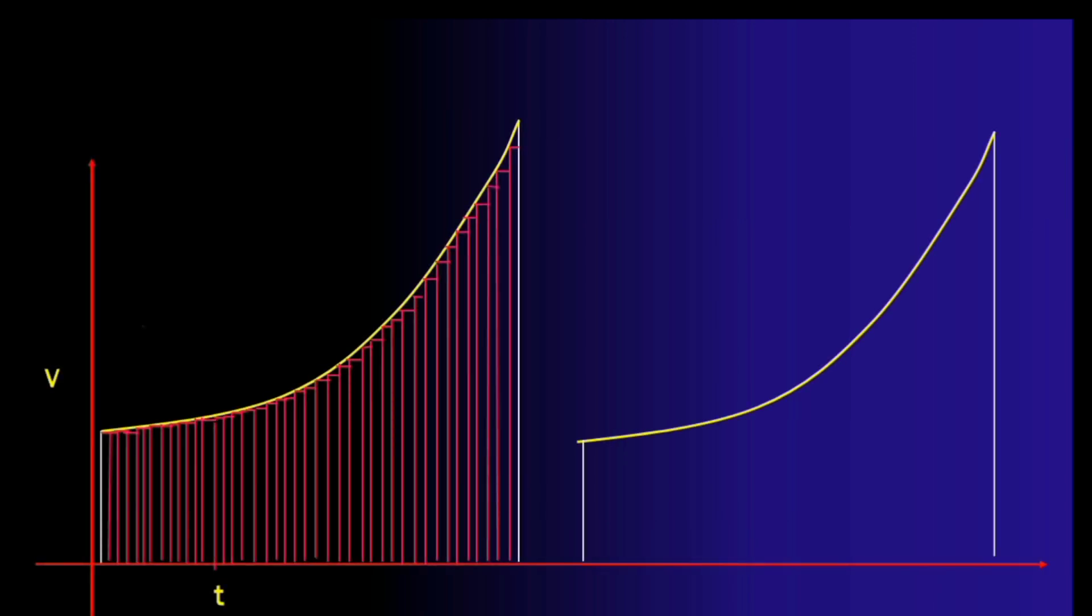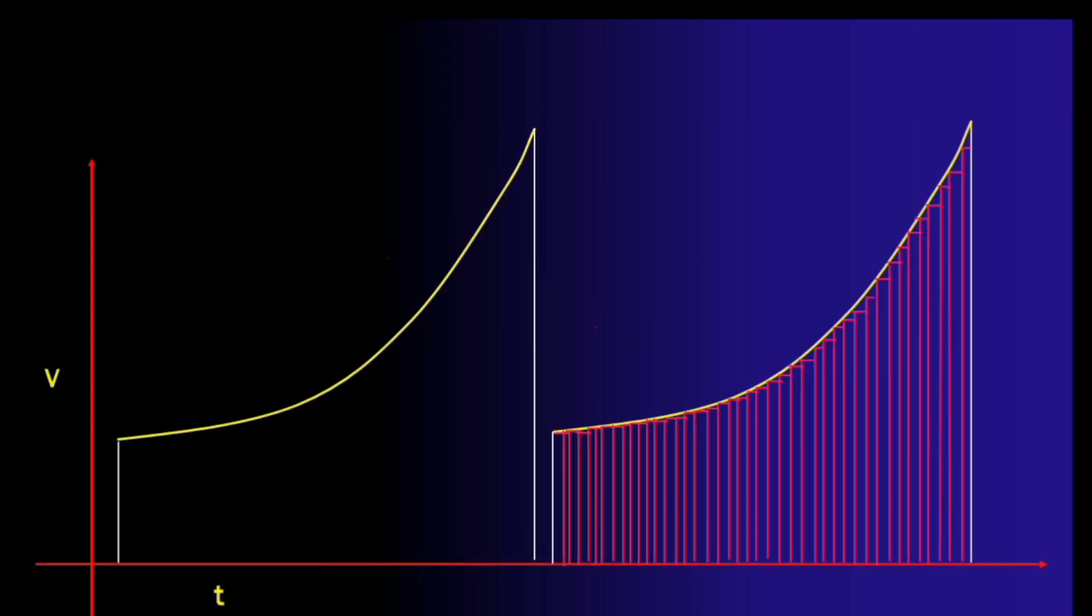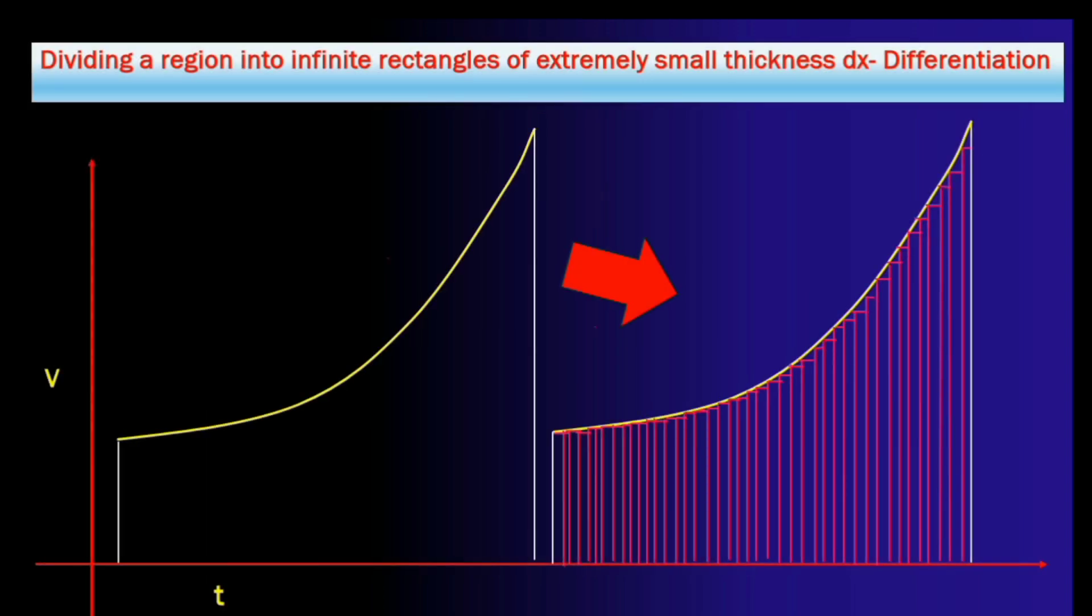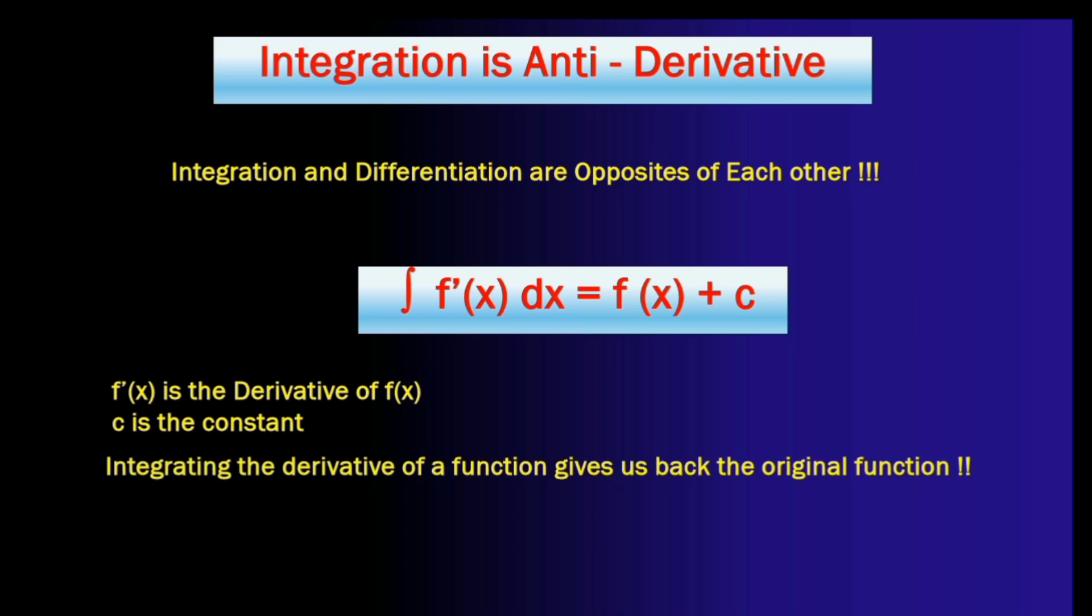So friends we can say that the process of continuously adding infinite number of rectangles of extremely small thickness dx is known as integration whereas the process of dividing a given region into infinite number of rectangles of extremely small thickness dx is known as differentiation. So by this time we would have already realized that integration and differentiation are the complete opposites of each other. In fact by integrating the derivative of a function we can actually get back the original function. So here as you can see integral of f dash dx is equal to f of x plus c where c is the constant.